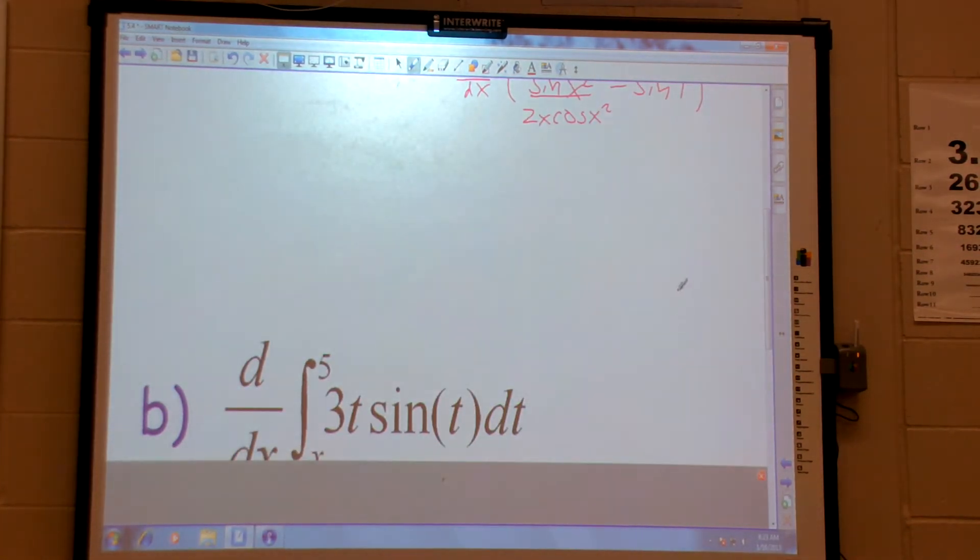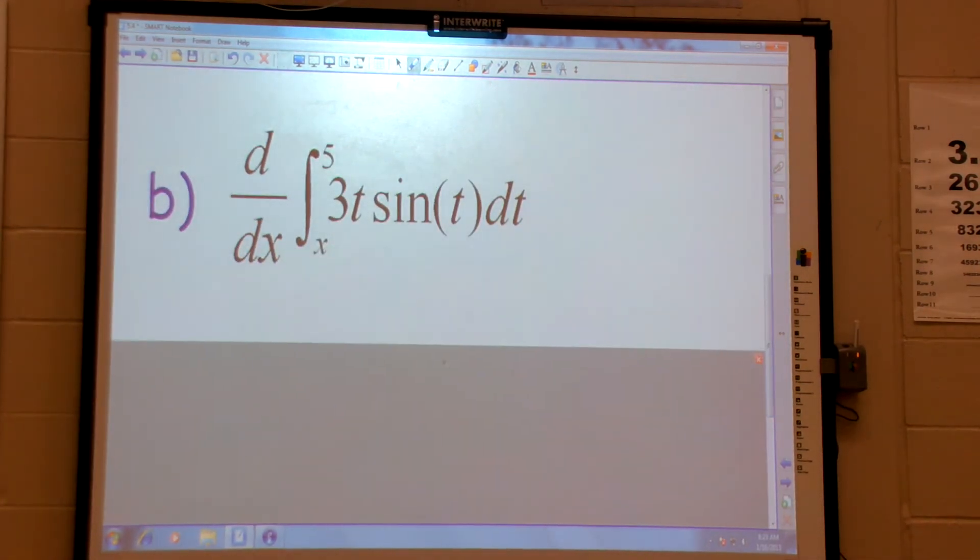Let's do another. D dx integral x to 5, 3t sine t dt. Problem, our FTC says constant to a variable. This one has a variable to a constant. Make it negative. Flip it, make it negative. So this is actually just negative 3x sine x. If I flip it, I'm just a regular old FTC part one.